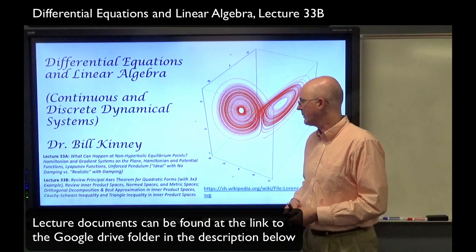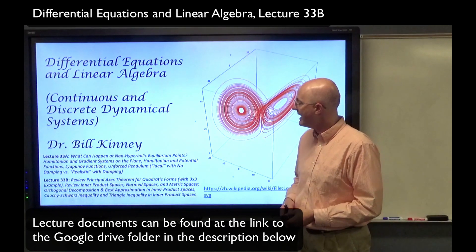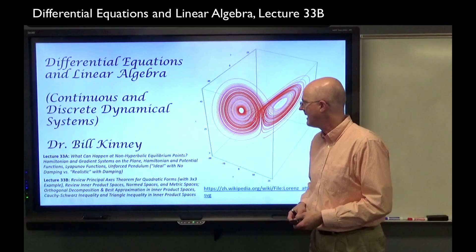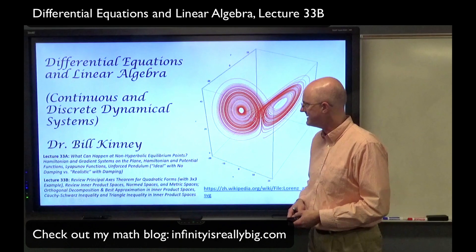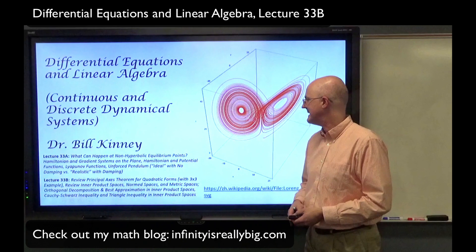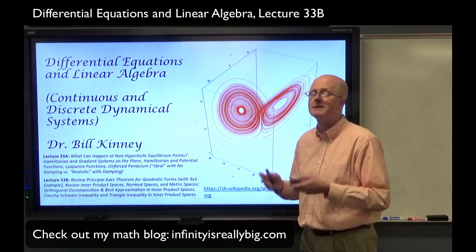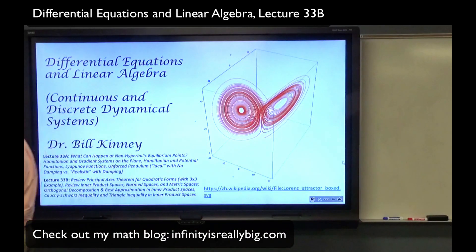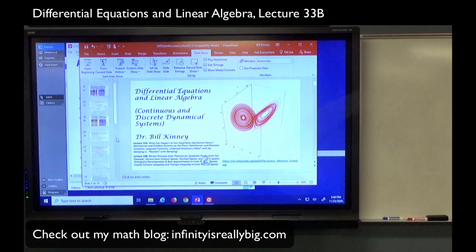Then we'll get more theoretical. We will review inner product spaces, norm spaces, and metric spaces. Orthogonal decomposition and best approximation in inner product spaces is something new. Then we'll end lecture 33b by looking at a couple of important inequalities and their proofs if we have time — something called the Cauchy-Schwartz inequality and the triangle inequality on inner product spaces. We will do an example with a functional space along the way as well, and that will be ultimately related to Fourier series.